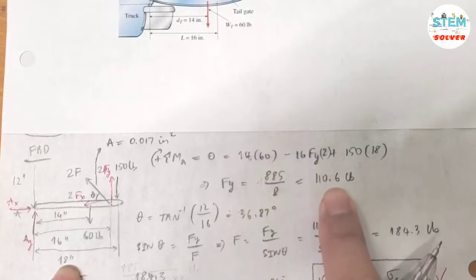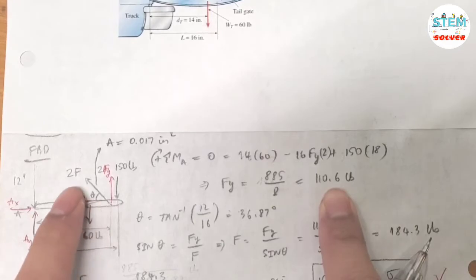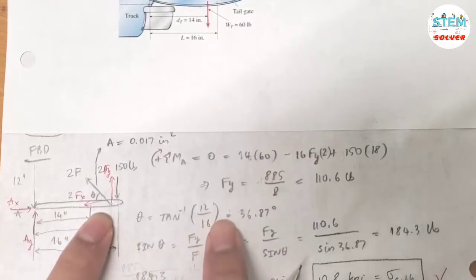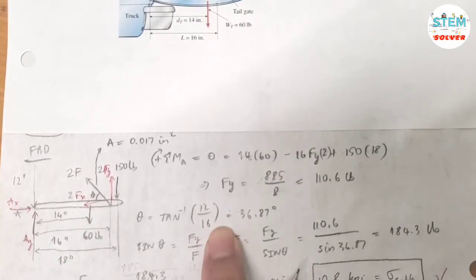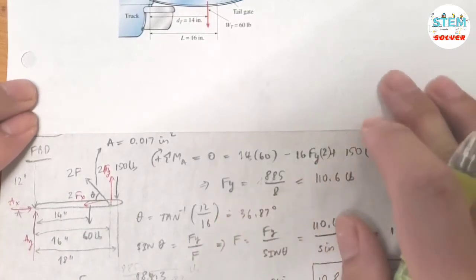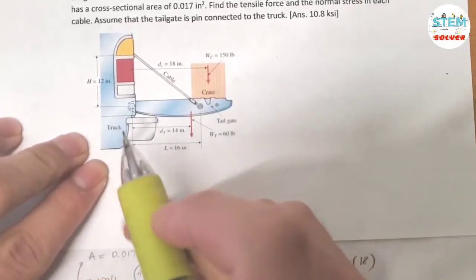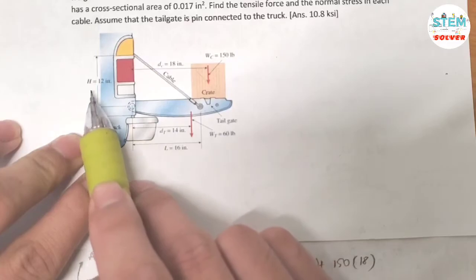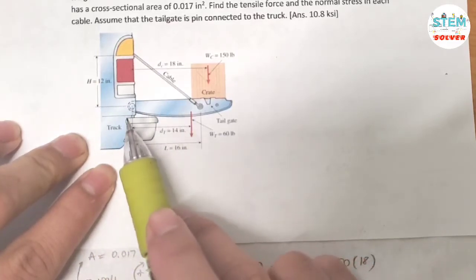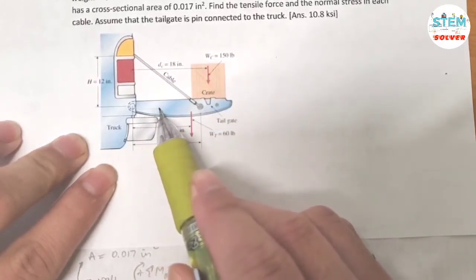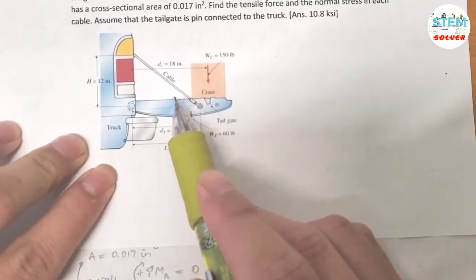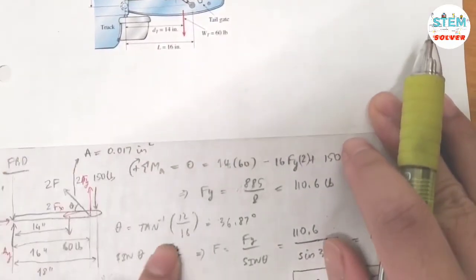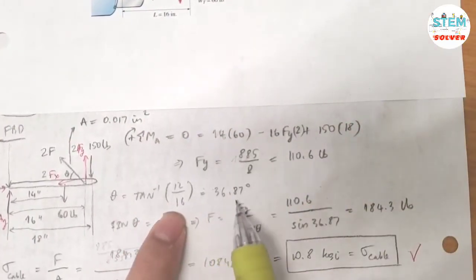Solving gives Fy equals 110.6 pounds. Now let's find the angle between the cable and the tailgate. The tailgate and the wall of the truck form a triangle: the vertical height to the cable attachment on the wall is 12 inches, and the horizontal distance is 16 inches. So theta equals tangent inverse of 12 over 16, which gives theta equals 36.87 degrees.